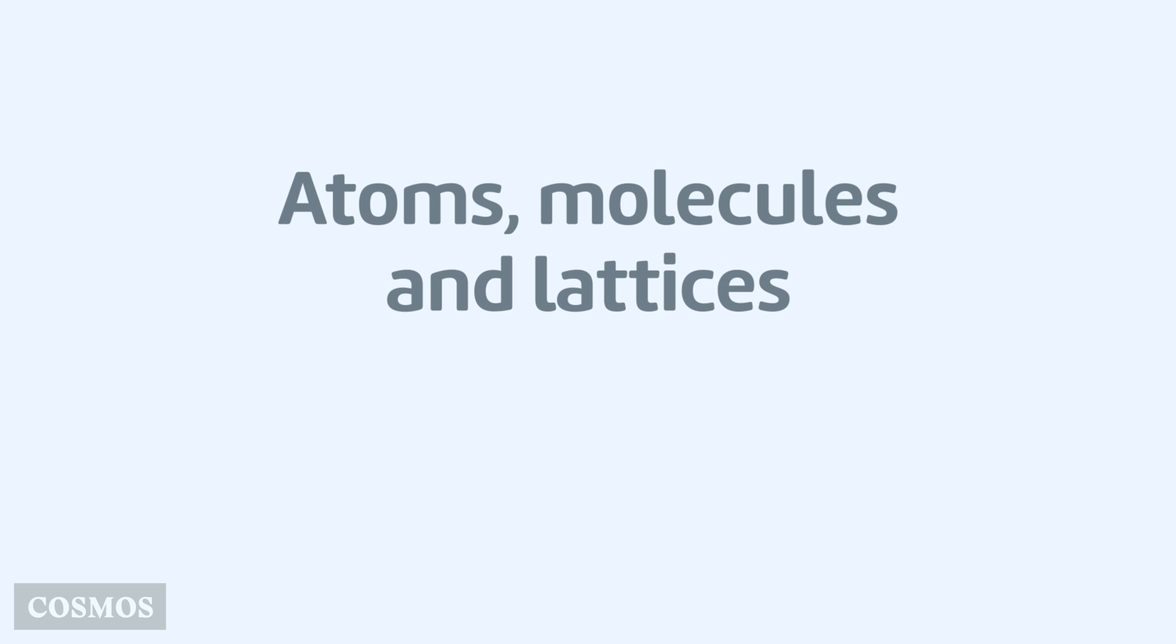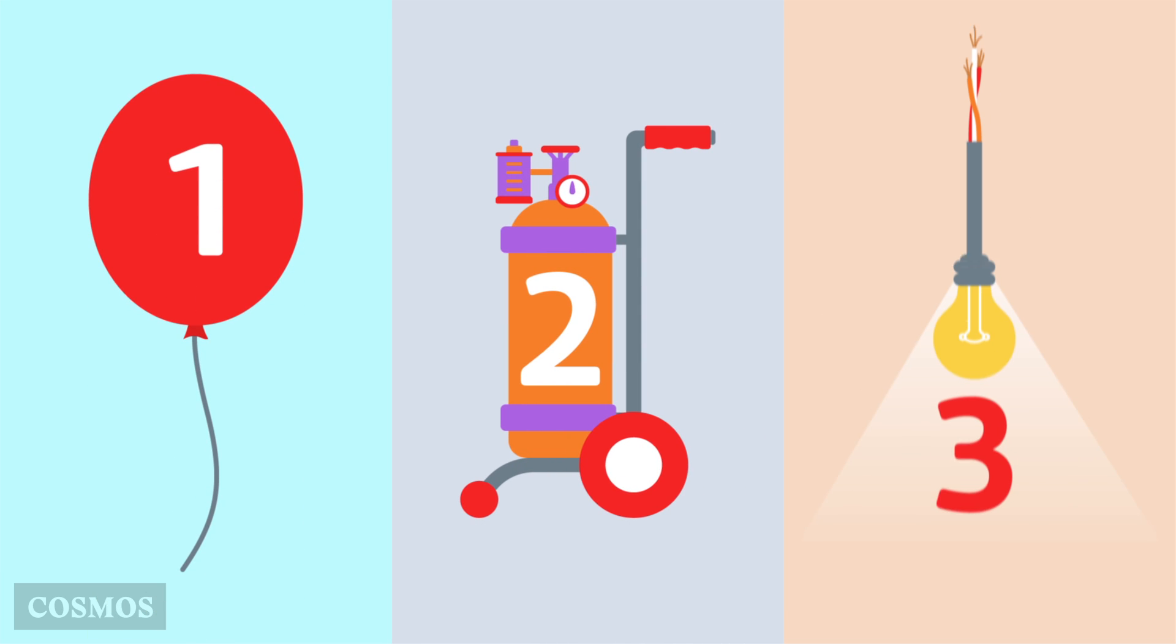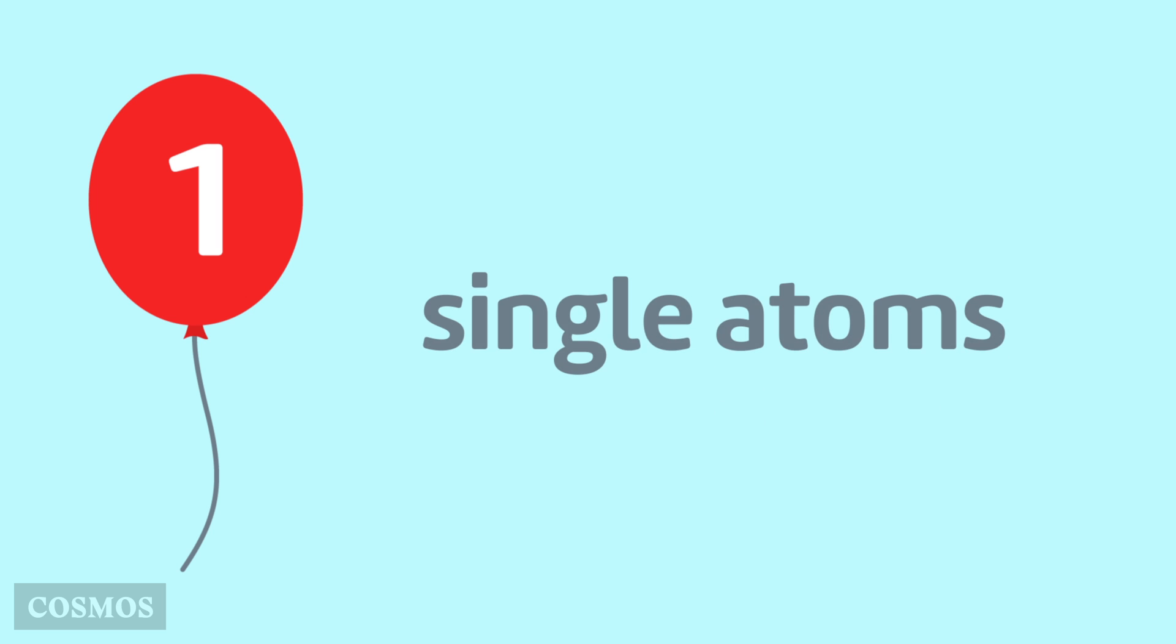Atoms, Molecules and Lattices. The atoms in chemical elements can be arranged in three different ways. A few elements are made up of single atoms.